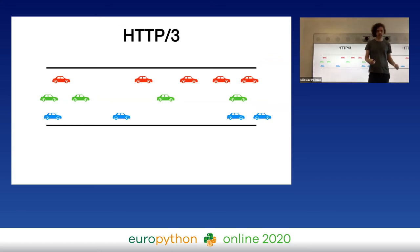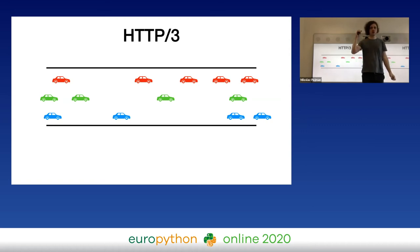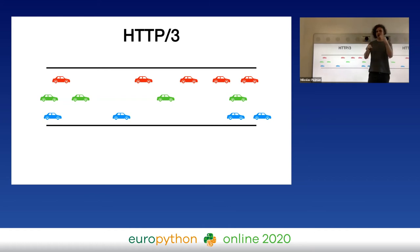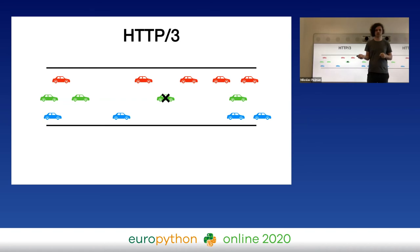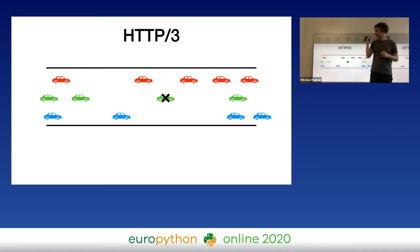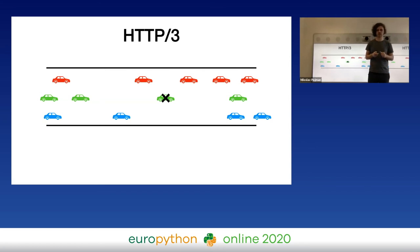QUIC, unlike TCP, supports independent streams — it knows what objects are in what stream. Thanks to that, when one packet is lost, only objects delivered in that packet are blocked; others can continue. This can improve performance and user experience on lossy connections.